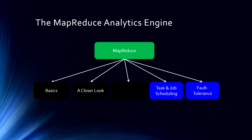In the previous lectures we talked about the basics of MapReduce, then we took a closer look over MapReduce, then we talked about mappers and reducers, how combiner is working, how partitioner is working, and what's the sorting function in Hadoop MapReduce. Later we talked about task and job scheduling, where we talked about job tracker and task tracker and how these work together. Now we will be discussing about fault tolerance.